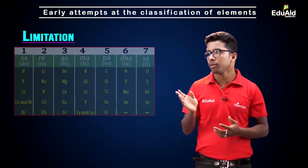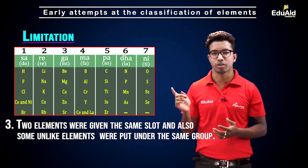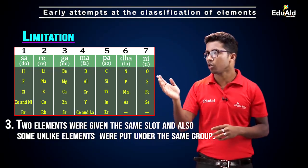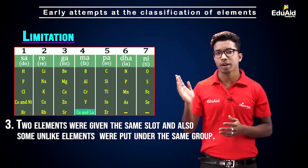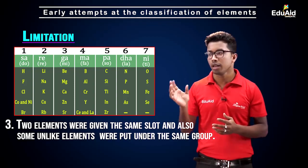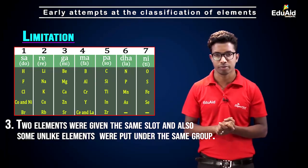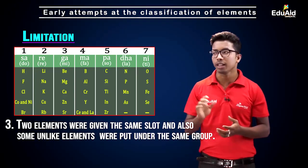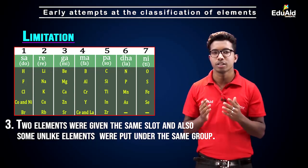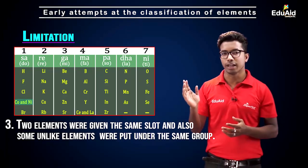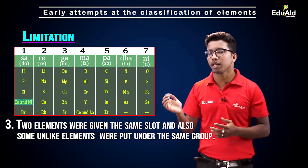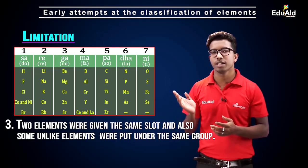A third limitation is that, in order to fit elements into his table, Newlands placed two different elements in the same slot. For example, cobalt and nickel are placed in the same slot, and cerium and lanthanum are also placed in the same slot. Furthermore, unlike elements — those whose properties are not similar — were placed together. For instance, cobalt and nickel are placed in the same group as chlorine and bromine, even though they are very different.